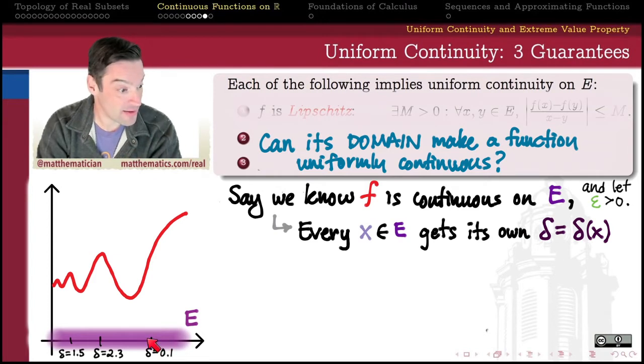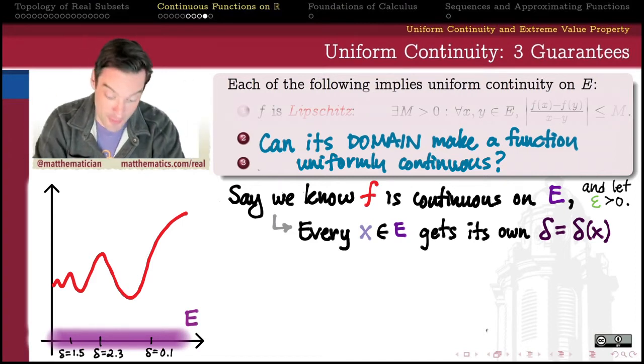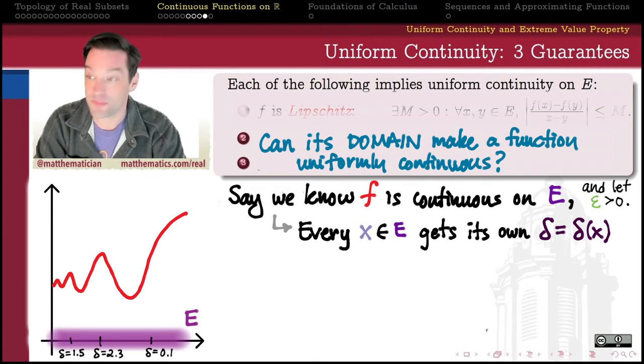So every x is going to get a different delta. Maybe over here, delta has to be 0.1. Maybe over here it can be 2.3. Maybe over here it can be 1.5. Different deltas for different x's. And so we might write something like this. Delta is a function of x. Delta depends on x.